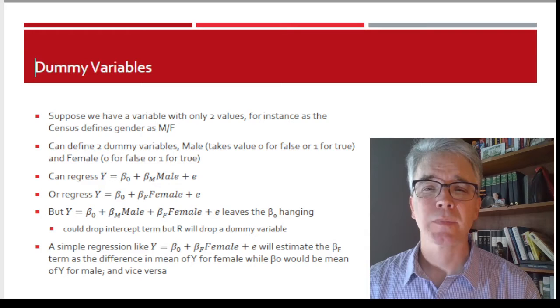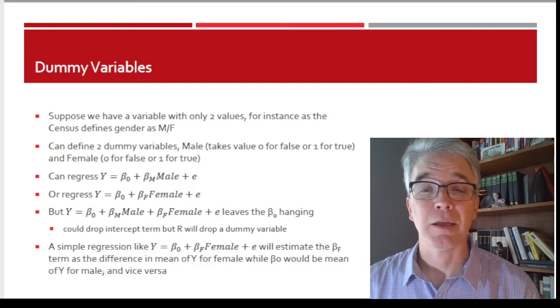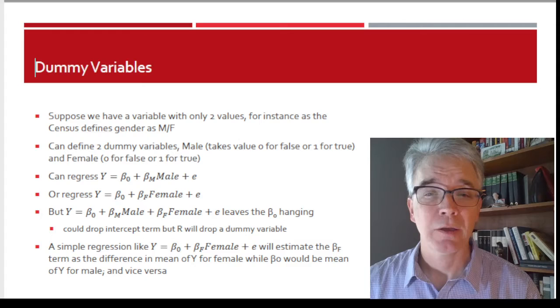Either way, you try to minimize the sum of squared errors there. But if I do Y = β₀ + βₘMale + βₓFemale, then this is going to leave that β₀ hanging.